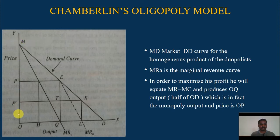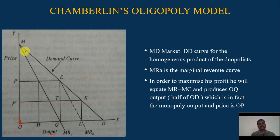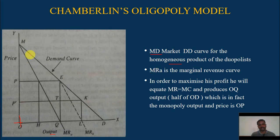Let us understand with the help of a graph. In this graph, the vertical axis represents the price and the horizontal axis represents the output. The demand curve is linear. MD is the market demand curve for the homogeneous product of the oligopolists. Firm A enters the market and faces the full demand curve MD. MRA is the marginal revenue curve of the duopolist, firm A.